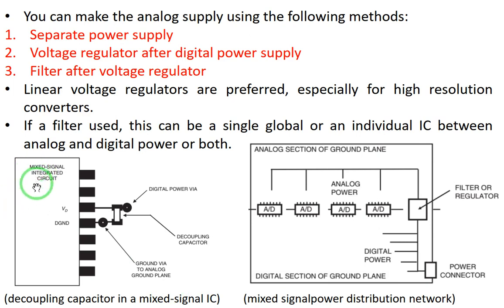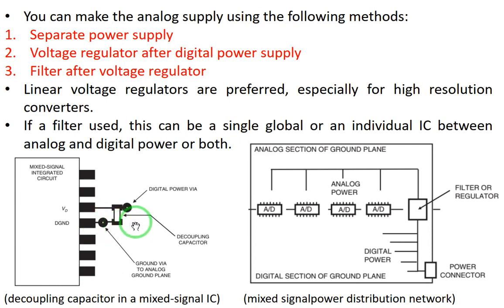Here is also shown a mixed signal IC and how the decoupling capacitor is connected. The digital power pin comes from one side and the analog ground pin connects via a ground via to the analog ground plane — this is the recommended approach. The idea is to create the shortest possible path for the pin and the capacitor. If you can place the cap close enough — for example directly on the bottom layer below the pin — you can also use two vias.